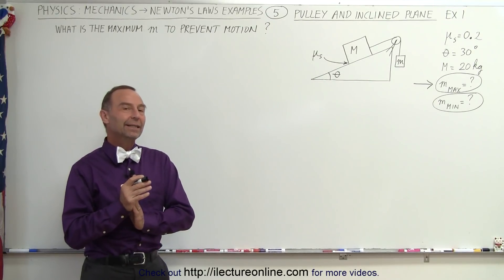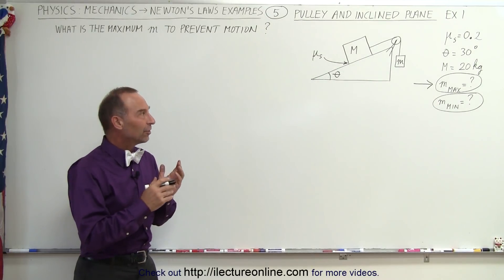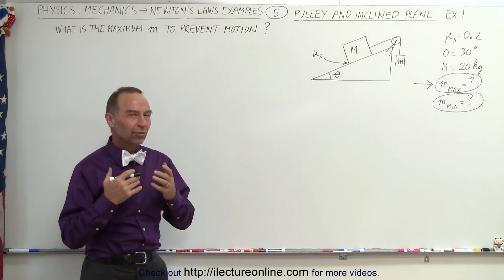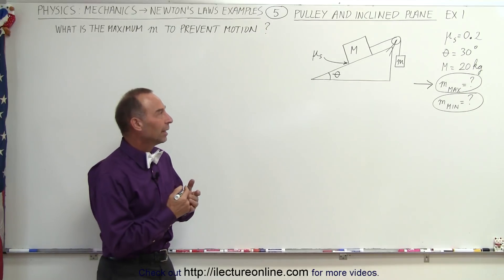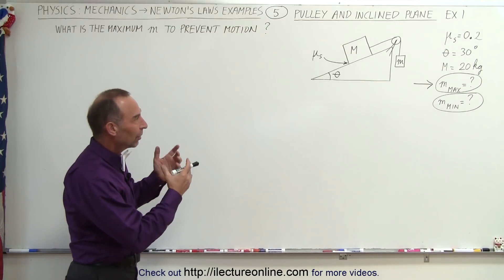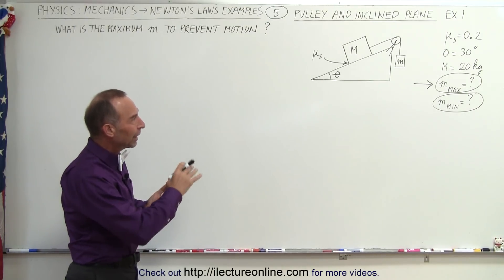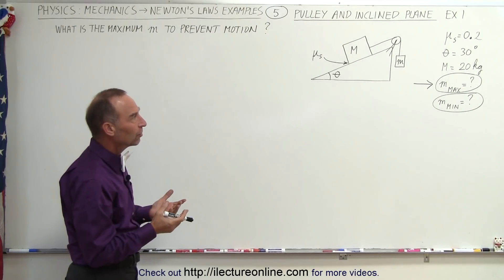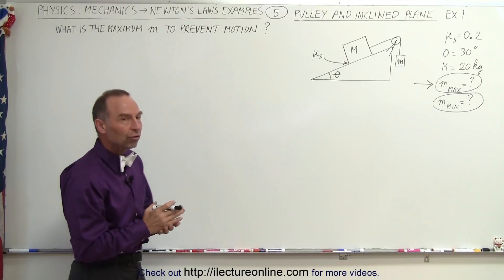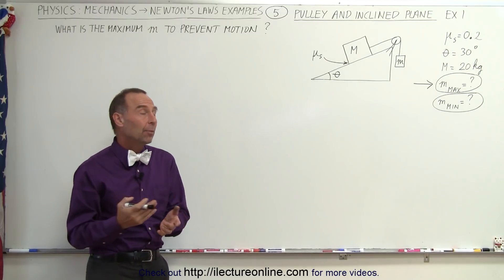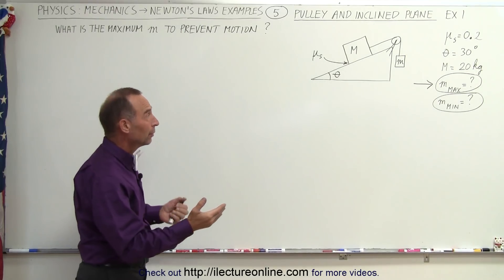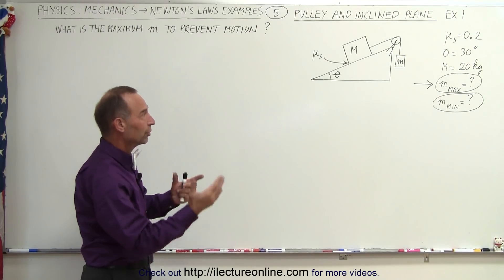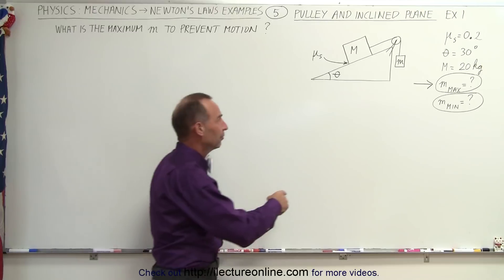Welcome to ElectronLine. Here's an example that we sometimes struggle with: the inclined plane with a pulley. We have two masses, and usually the problem is set up where there's an acceleration in one direction or the other.